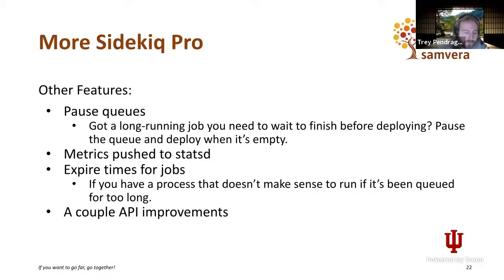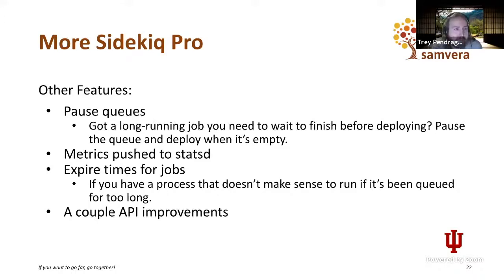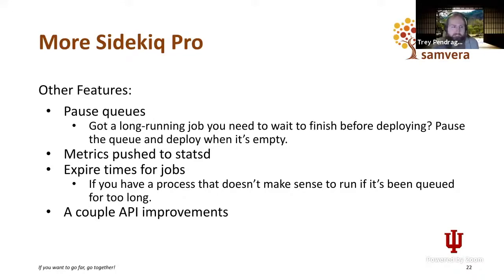A couple of other Sidekiq Pro features worth mentioning: you have the ability to pause queues, which might be important if you're ingesting a book for six hours and want to wait to finish before deploying — it might be safe to run the job again, but you'll probably end up with files copied somewhere you didn't want. There's an API for pausing, so you could do it as part of your deploy process. It also pushes metrics. You can add expire times for jobs — if a job has been queued for a long time and it doesn't make sense to run it, like a daily report that would be stale if it ran tomorrow.